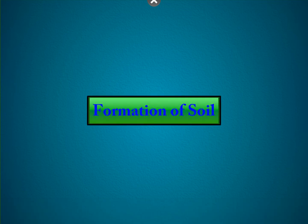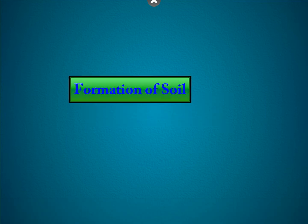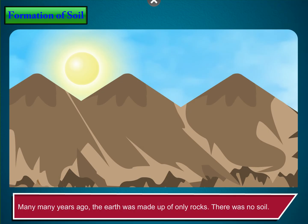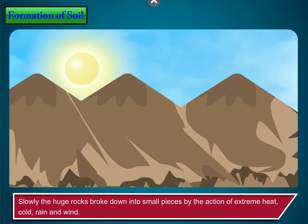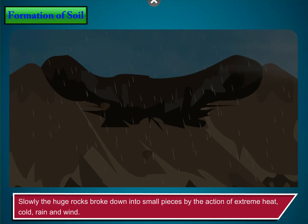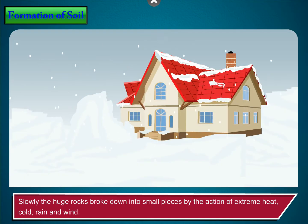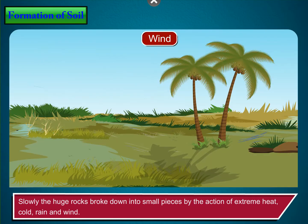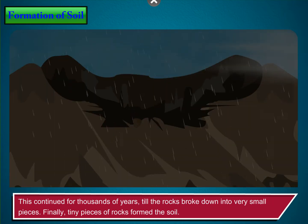Formation of soil: many many years ago, the earth was made up of only rocks. There was no soil. Slowly, the huge rocks broke down into small pieces by the action of extreme heat, cold, rain, and wind. This continued